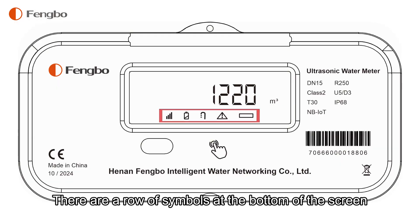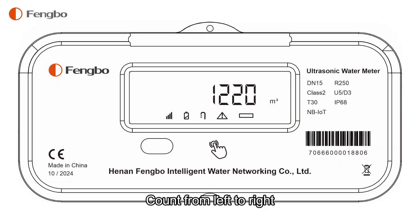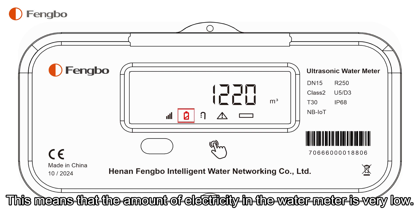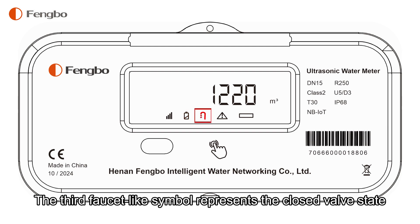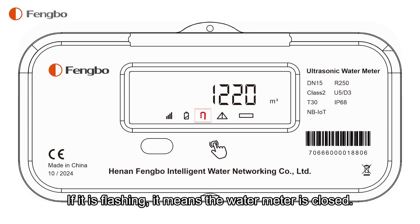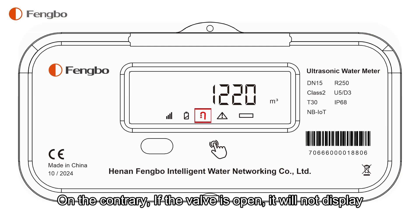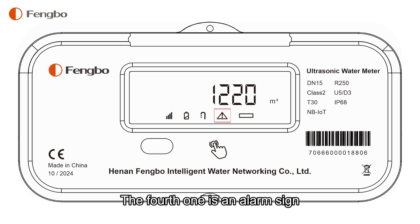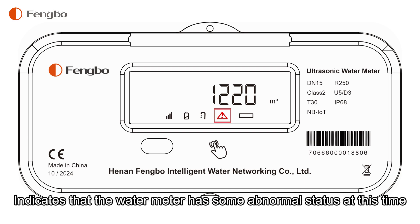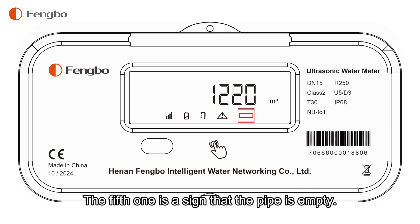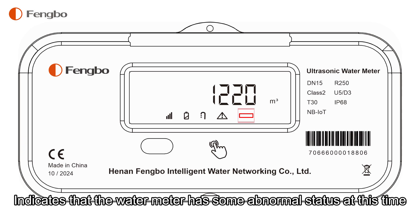There are a row of symbols at the bottom of the screen from left to right. The first is signal strength, the second represents the battery level — if low, it means the amount of electricity in the water meter is very low. The third faucet-like symbol represents the closed valve state; if it is flashing, it means the water meter is closed. The fourth is an alarm sign — if it flashes, it indicates the water meter has some abnormal status. The fifth is a sign that the pipe is empty, meaning there is no water in the pipe section.